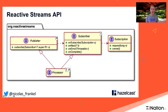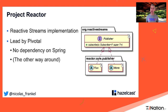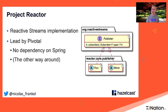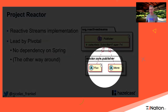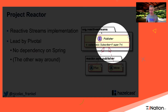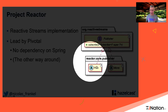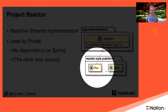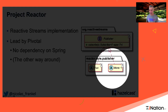Those building blocks are just interfaces, so you need an implementation. You can write your own, but that's a lot of work, or you can use an existing one. Since the demo I'll show is based on Spring Boot, I'll talk about Project Reactor, which most Spring developers are familiar with. Project Reactor is an implementation of the Reactive Streams spec, giving you Flux — for zero to infinite items — and Mono — for zero or one item.